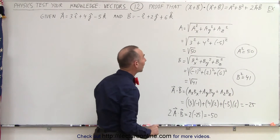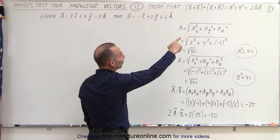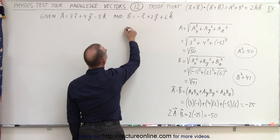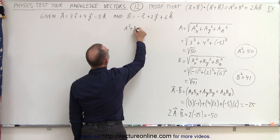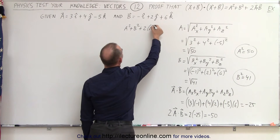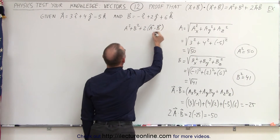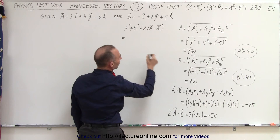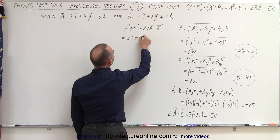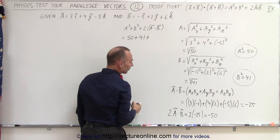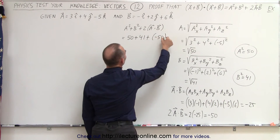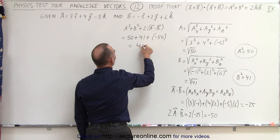Now let's calculate A squared plus B squared plus 2 times the dot product of A and B. That is equal to 50 plus 41 plus negative 50, which equals 41.